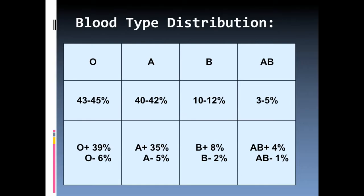If you look down at the bottom of the chart, you can see that O is divided into O positive and O negative. 39% of the population — out of that 43% to 45% — are O positive, and 6% are O negative. Same thing for A: A positive is more common than A negative, B positive more common than B negative, and AB positive at 4% more common than AB negative. Only 1% of the population is AB negative, so very rare.